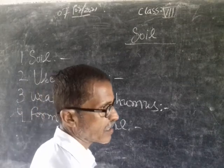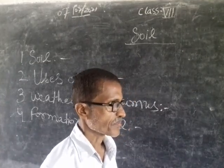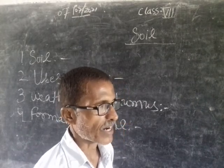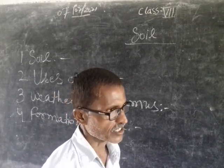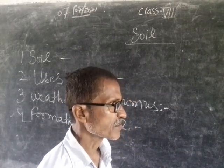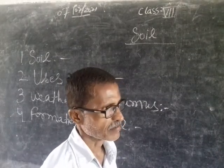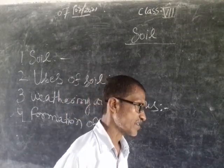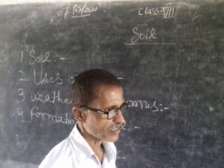Soil is the uppermost layer of the earth's crust. It is made of humus and fine rock particles. It also contains living organisms, grass particles, etc. It also contains air and water, which are essential components of Soil. Soil is a natural resource whose color is dark brown.